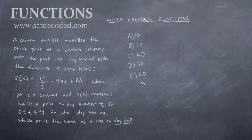And this next question is probably the hardest of the bunch, but it's not too bad either. A certain analyst modeled the stock price of a certain company over the past 100-day period with the function s given here. It says s(t) = t²/2 - 40t + m, where m is a constant, and s(t) represents the stock price on day number t for 0 ≤ t ≤ 99. On what day was the stock price the same as it was on day 20? And here are our possible choices: 10, 30, 40, 50, and 60.